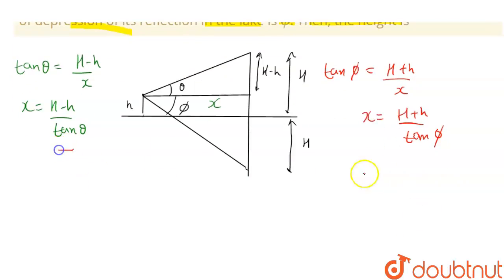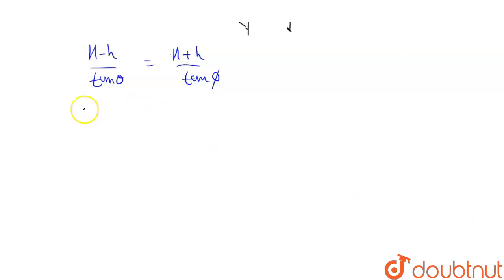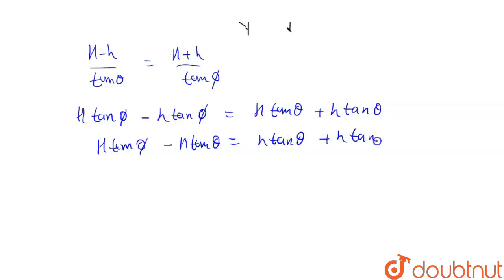From these equations, if we equate the value of x, we get H minus h upon tan theta equals H plus h upon tan phi. Or if we cross multiply this, H tan phi minus h tan phi should equal H tan theta plus h tan theta. So if we shift small h to one side and capital H to one side, this becomes H tan phi minus H tan theta equals h tan theta plus h tan phi.